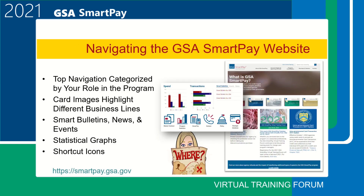The latest website design categorizes navigation by program role. There are four major sections: general information about GSA SmartPay, account holders and approving officials, program coordinators, and businesses and vendors. Across the center of the homepage, card images highlight the different options GSA SmartPay offers, including purchase, travel, travel tax advantage, fleet, and integrated. There are three main areas on the homepage where we will post important or new information and program updates. Further down, there are a few statistical graphs for spend and transactions within the program.